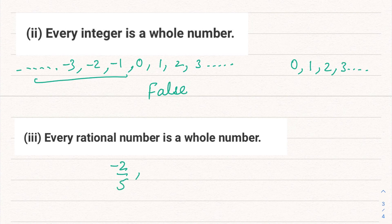Let's say minus 2 by 5, 4 by 3, 20 by 50—these numbers are rational numbers. So is every rational number a whole number? Definitely, again, this is also a false statement.